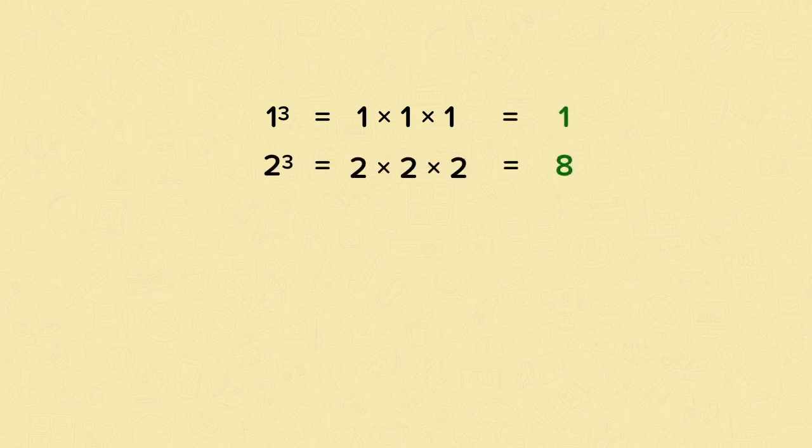So 1 cubed is just 1 times 1 times 1, which is 1. 2 cubed is 2 times 2 times 2, which is 8. And 3 cubed is 3 times 3 times 3, which is 27.